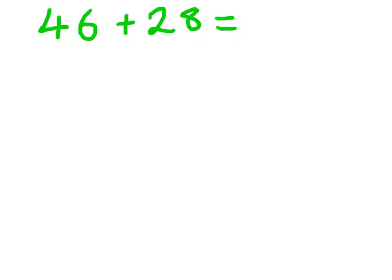This is a way to add two-digit numbers together using partitioning, which involves separating the tens and units and then adding them together.